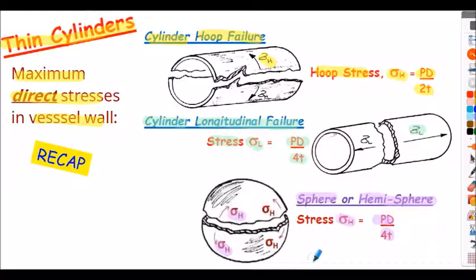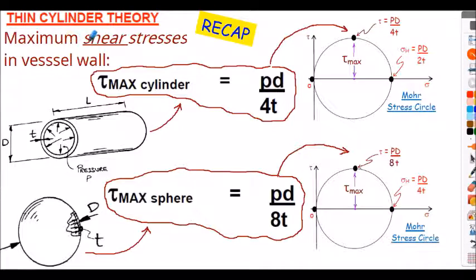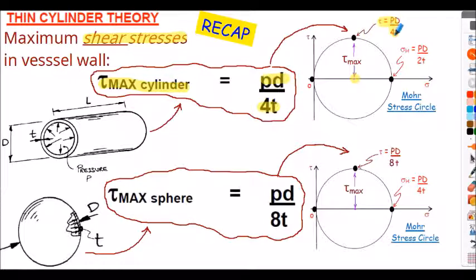Sometimes you see domed ends on pressure cylinders to reduce stresses at the vessel ends. We also mentioned maximum shear stresses — derived from Mohr's stress circle. The maximum shear stress in a cylinder is pd/4t, which is the radius of the Mohr's stress circle. For a sphere or hemisphere, the maximum shear stress is pd/8t, which is the radius of that circle.